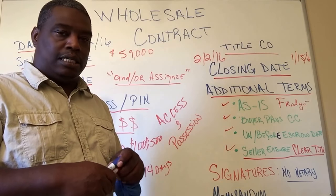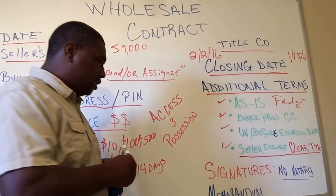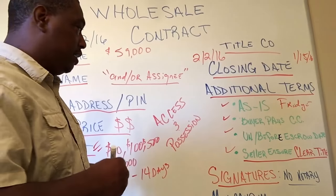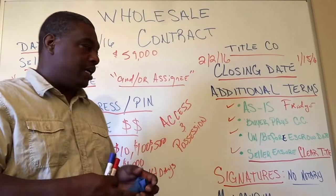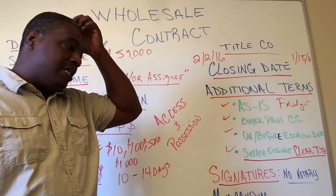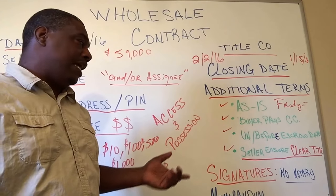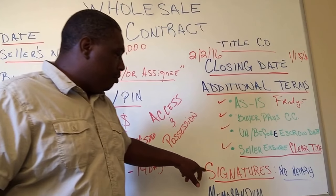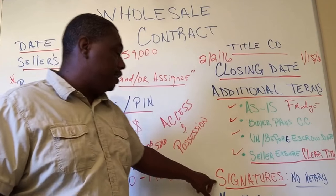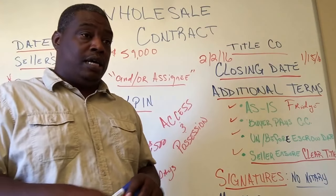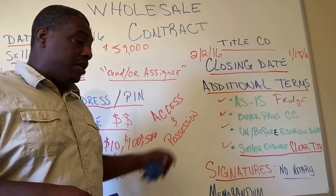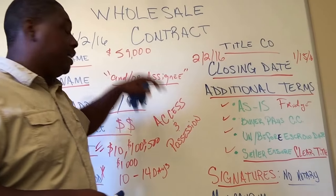Next, you need to have signatures — the buyer's signature and the seller's signature on the contract. It does not have to be notarized in most states, but you can have it notarized if you desire. Along with the signature, include the date of the contract next to the signatures — very important — so we know that contract was legally agreed upon on that date, for example January 2nd, 2016.